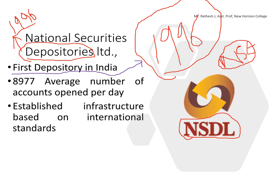One important milestone of NSDL is that on average, approximately 8,977 — nearly 9,000 — accounts are opened per day. This is an average number, and it is a significant achievement for NSDL that nearly nine thousand accounts are opened every single day.